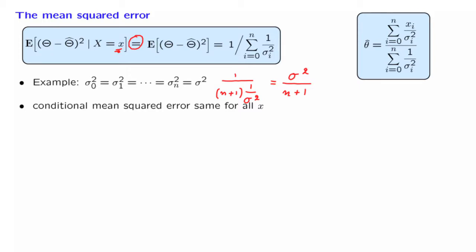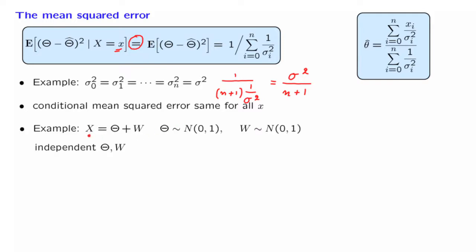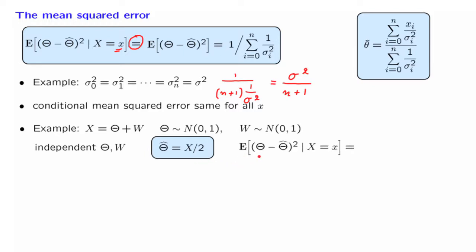To really appreciate what that statement means, let us revisit the very first example we studied, with only one observation where theta and W are standard normal random variables. We found that the MAP estimator was one half of the observation. We can now also calculate the conditional mean squared error for any particular observation. Applying the formula with σ equal to 1, we find it equals one half. So we started with a prior variance for theta of 1, and after obtaining the observation, the uncertainty is reduced — the variance goes down to 1/2, no matter what little x is.